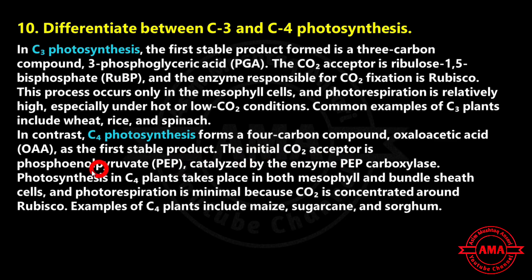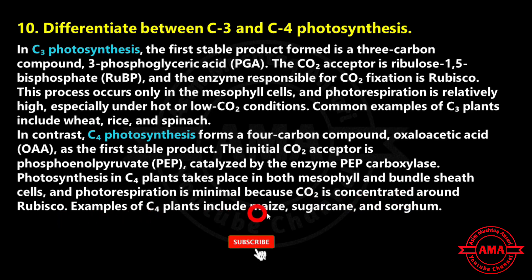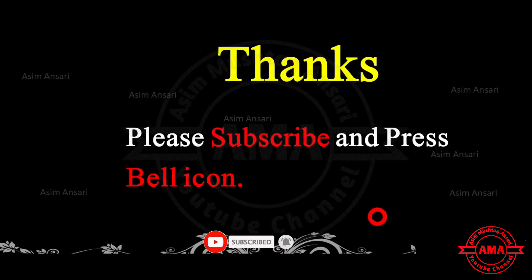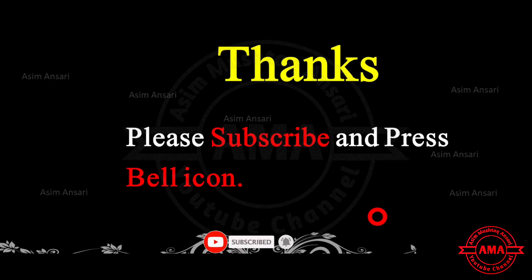In contrast, C4 photosynthesis forms a 4-carbon compound, oxaloacetic acid, as the first stable product. The initial carbon dioxide receptor is phosphoenolpyruvate, catalyzed by the enzyme PEP carboxylase. Photosynthesis in C4 plants takes place in both mesophyll and bundle sheath cells, and photorespiration is minimal because carbon dioxide is concentrated around Rubisco. Examples of C4 plants include maize, sugarcane, and sorghum. This concludes the 11th biology chapter 6 Bioenergetics exercise.